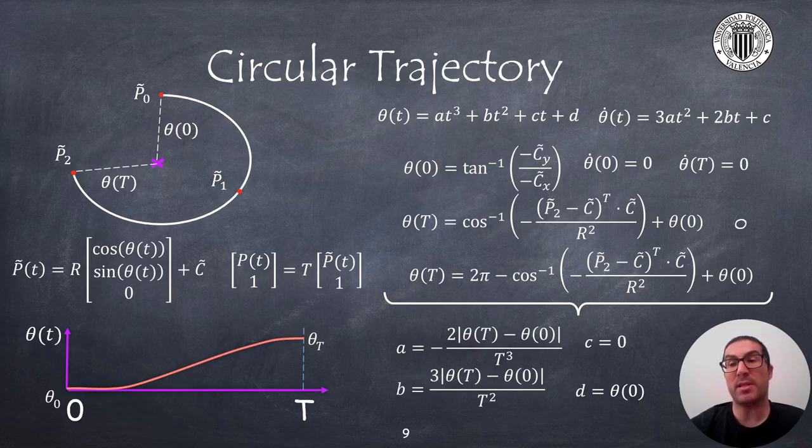The angle theta can be expressed again as a cubic trajectory over time with boundary conditions as indicated here, which leads to parameters a, b, c and d as indicated in the formulas.